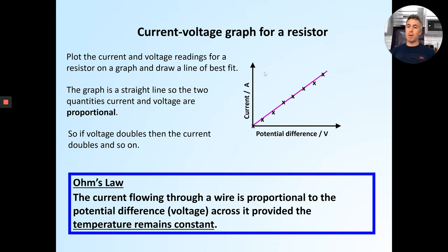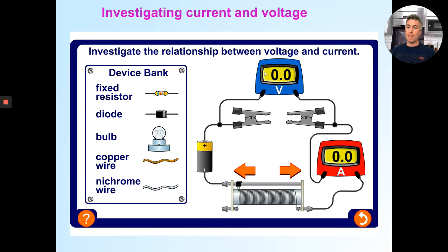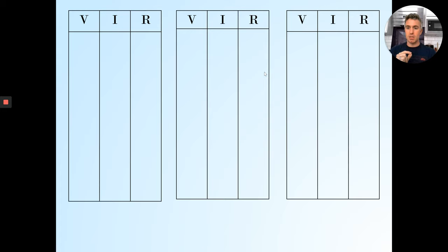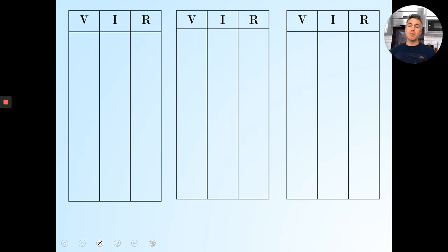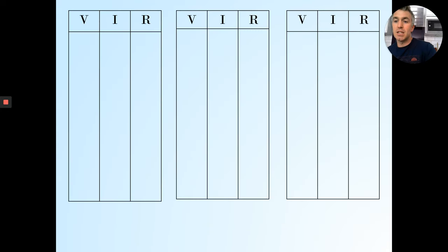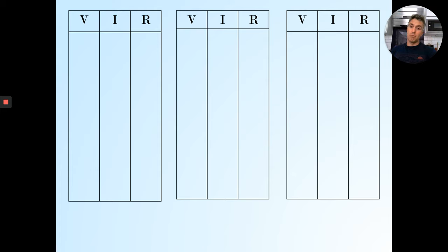The other thing I haven't told you to do — I'd like you to work out the resistance. The equation for resistance is V = IR, so voltage divided by current equals resistance. If you do this value for V divided by this value for I, you get a value for R. So you calculate V ÷ I = R for each row. Hopefully the resistance should stay the same throughout.